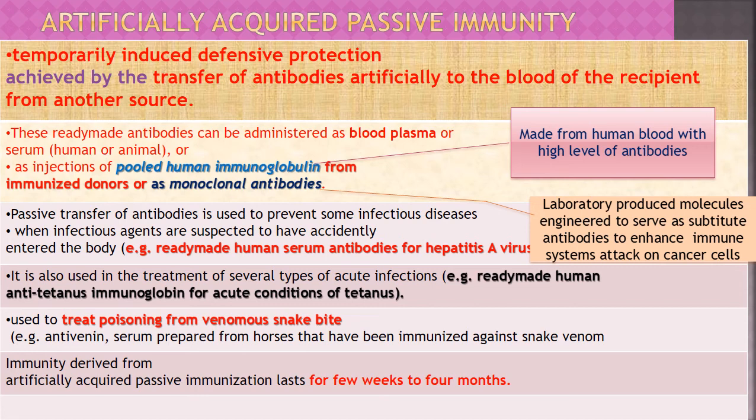Anti-venom provides immediate immunity and protects the person at that particular moment. These antibodies directly go and inactivate those toxins or microbes. Immunity derived from artificially acquired passive immunity lasts only a few weeks to four months — protection exists only for a very short time.